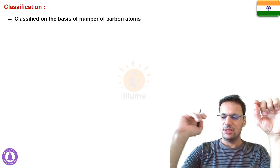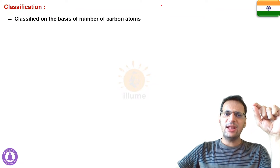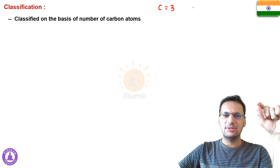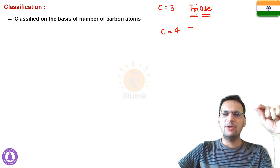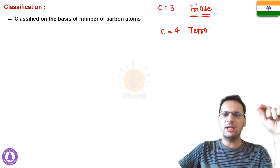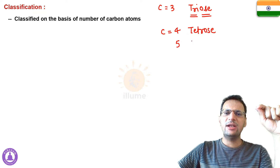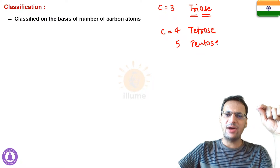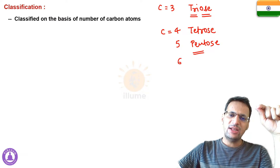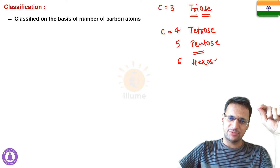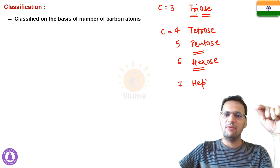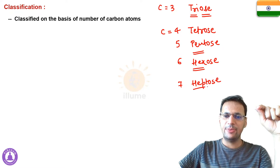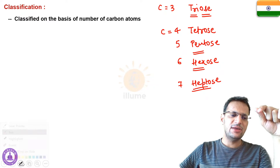The main classification of monosaccharides is based on the number of carbon atoms. Three carbons = triose (tri = three); four carbons = tetrose (tetra = four); five carbons = pentose (pent = five); six carbons = hexose (hex = six); seven carbons = heptose (hept = seven). This is the basic classification.